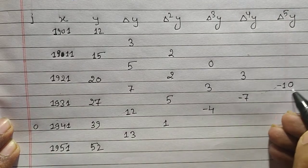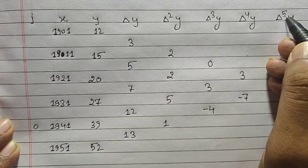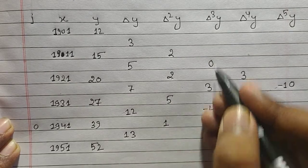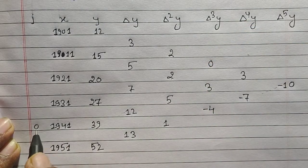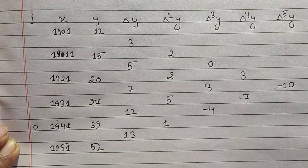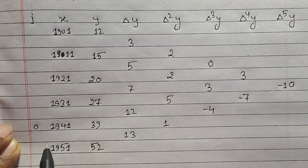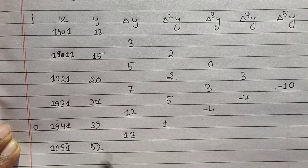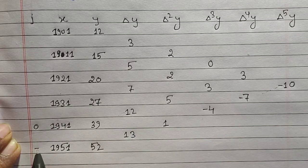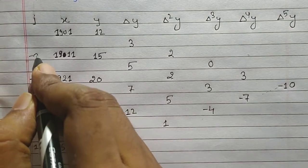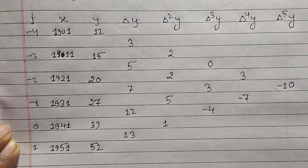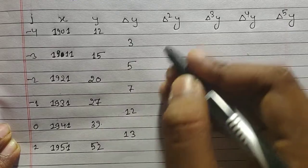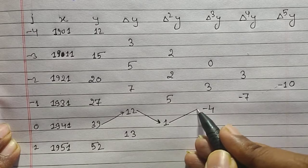So let's take 1941 as x₀ so that our calculation will be easier. Taking this as x₀, we need the formula only up to Δ³y, whereas taking 1931 would require up to Δ⁵y. Always move through the shorter path since numerical method problems are time-consuming. So with 1941 as x₀ = 0: positions become +1, −1, −2, −3, −4. Mark y₀ accordingly.